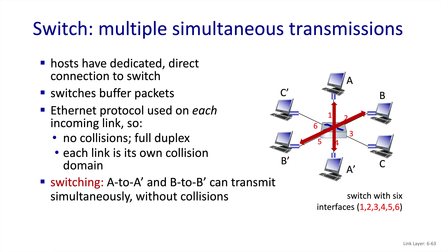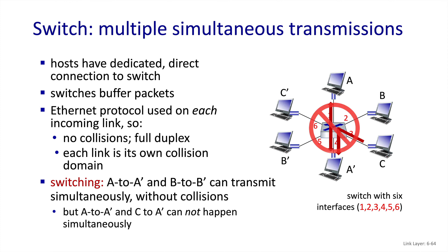In this case, we have A transmitting to A' simultaneously with B transmitting to B', and there's no contention between these flows. They're able to happen simultaneously, and each can utilize their full link bandwidth. Of course, if we have two different hosts transmitting to one host — in this case A to A' and C to A' — they're going to have to share the bandwidth on the link between the switch and A'. The switch will buffer packets temporarily and interleave them, but if the total rate exceeds the bandwidth of the A' link, then the buffer will start to drop packets.